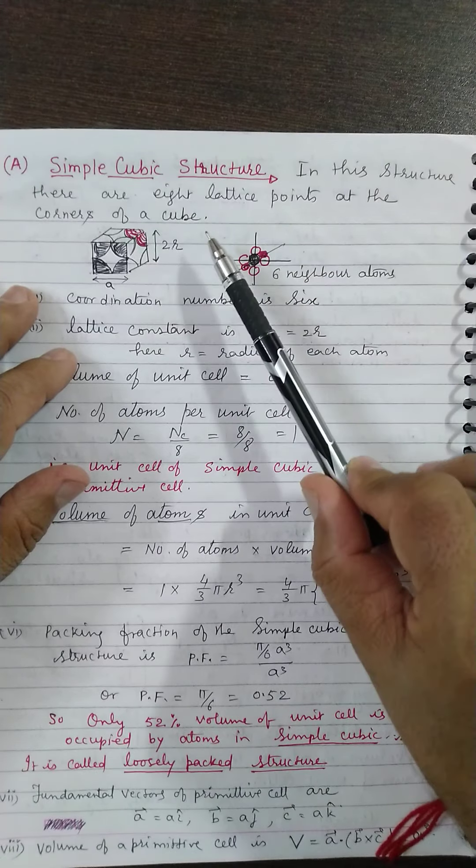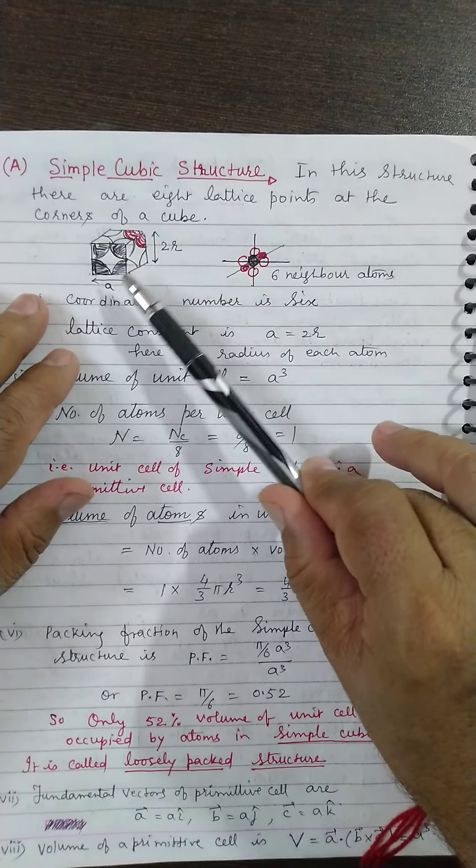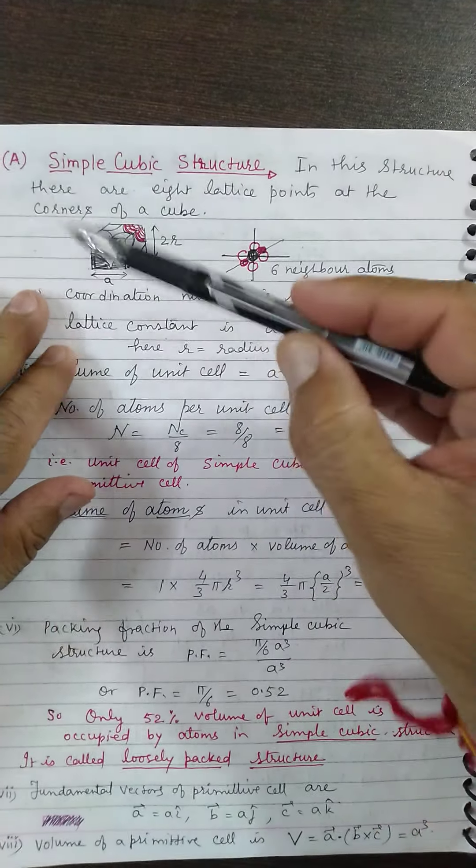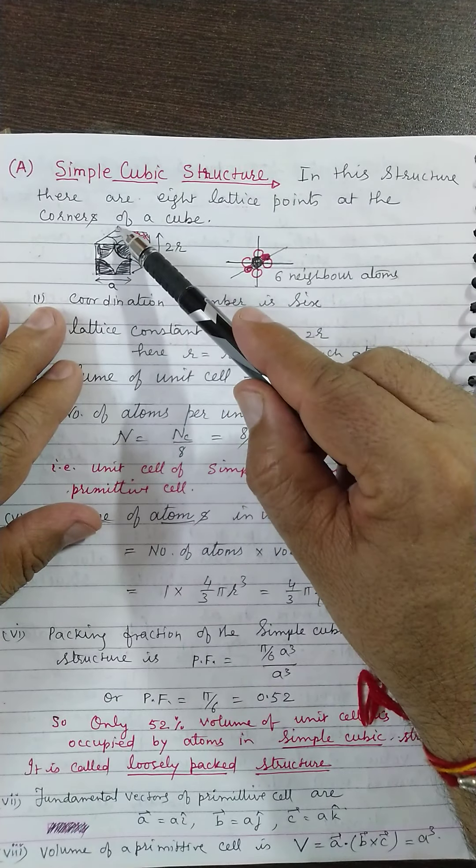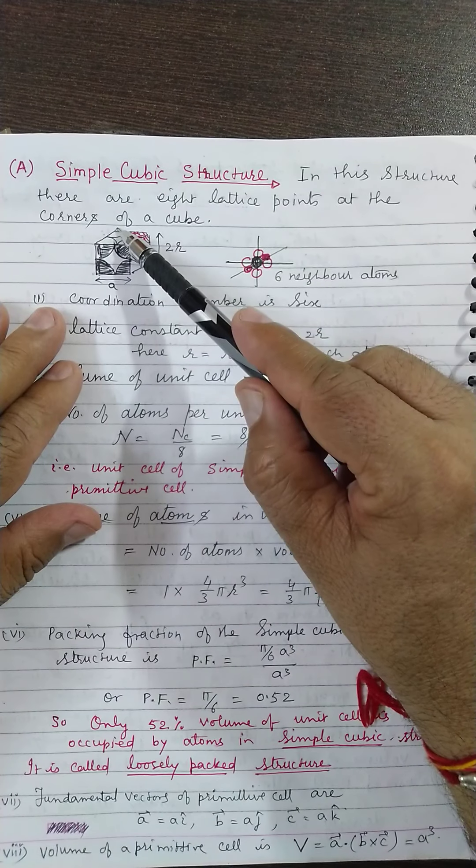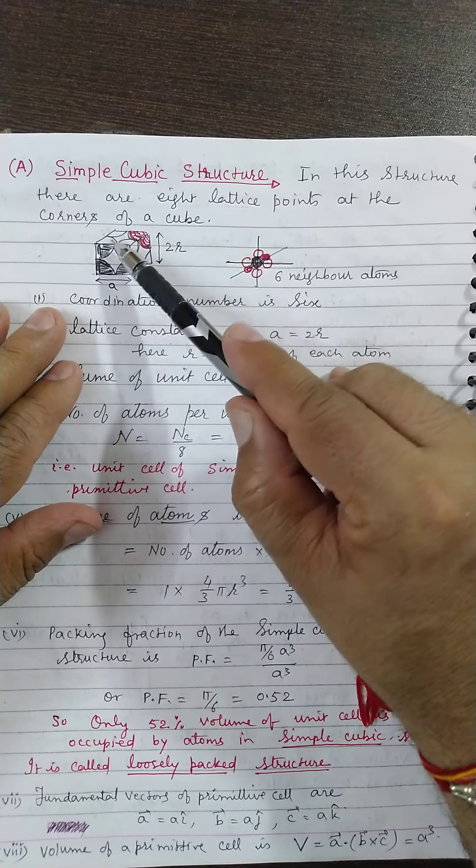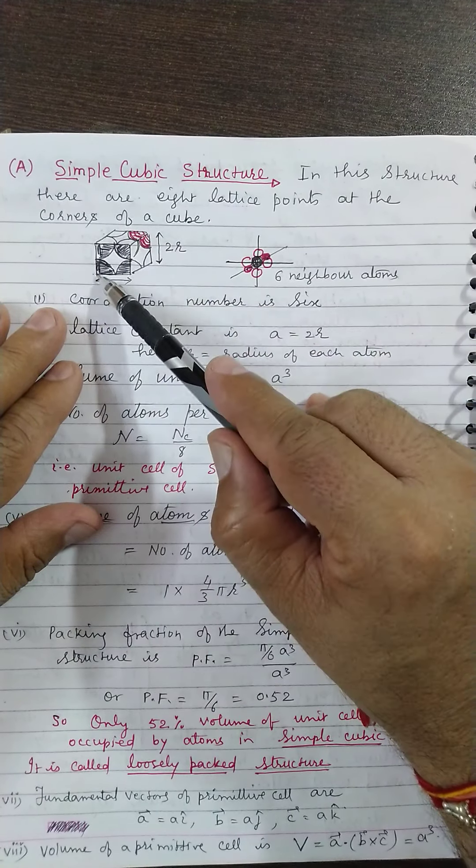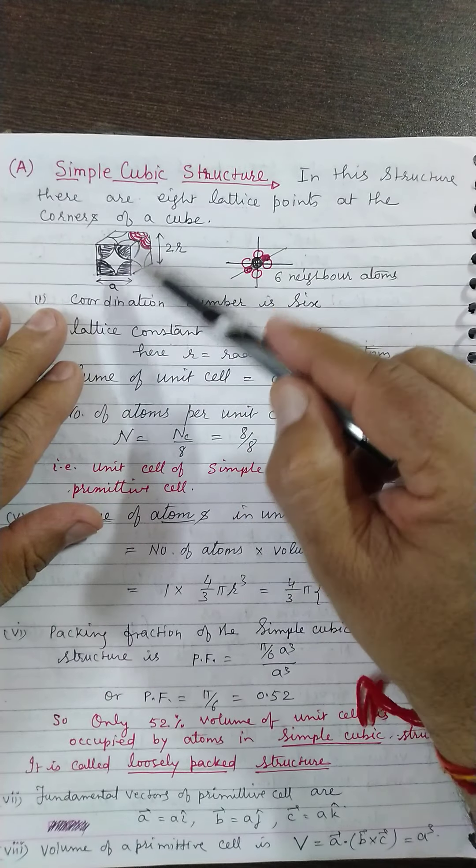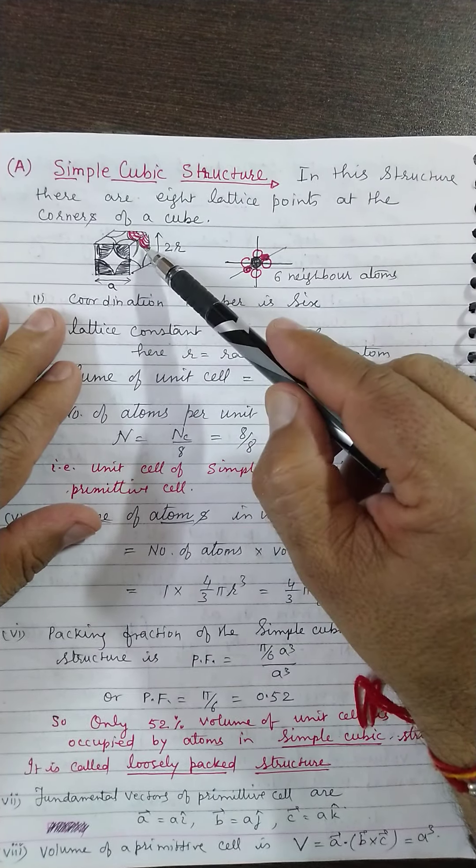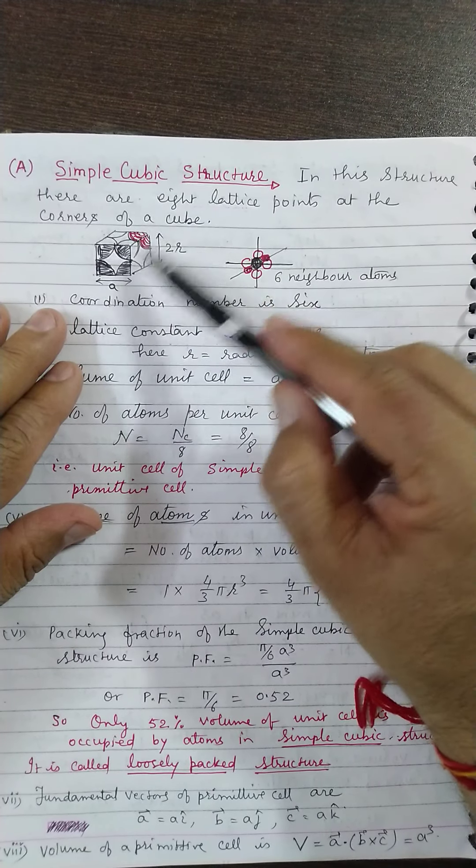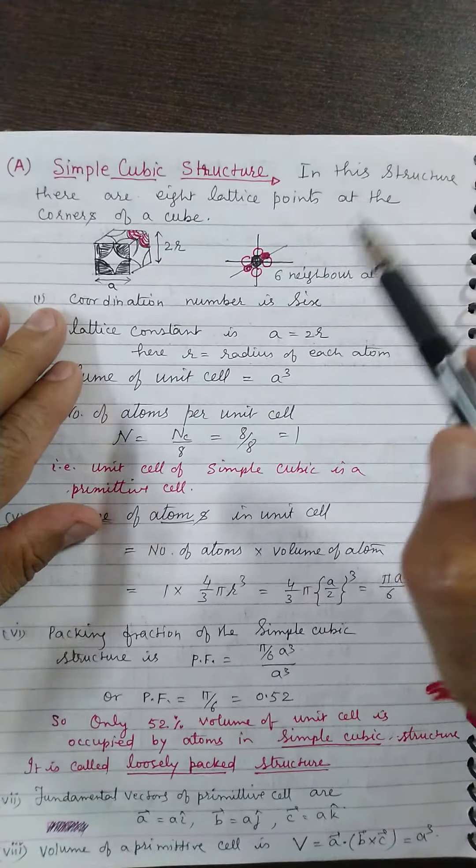All eight corners are occupied by lattice points. So you can fit atoms at all the corners of a cube. And we know all these eight atoms—one, two, three, four on the upper side and one, two, three, four in the lower side—will touch each other and form a simple cubical structure.